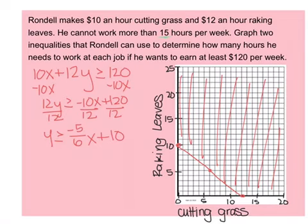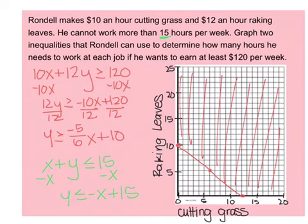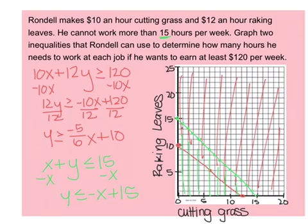Now I deal with the 15 hours. The hours cutting grass plus the hours raking leaves cannot be more than 15 per week, so: x + y ≤ 15. I subtract x to get y ≤ −x + 15. I begin at 15 and go down 1 over 1, doing that throughout the entire graph. It's going to be a solid line, and I need my y's to be less than that, so I shade below. All of my solutions are going to be the ones right here in the middle, because that's where the red and the green are.